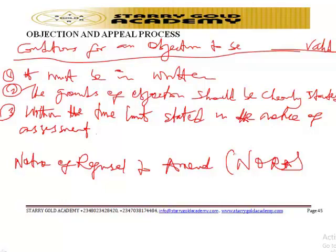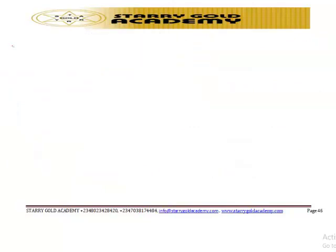The NORA will lead or force the taxpayer to approach the appeal tribunal. Once the tax authority serves a notice of refusal to amend, the taxpayer, if they so wish, can appeal against the assessment within 30 days from the date of service of that notice.